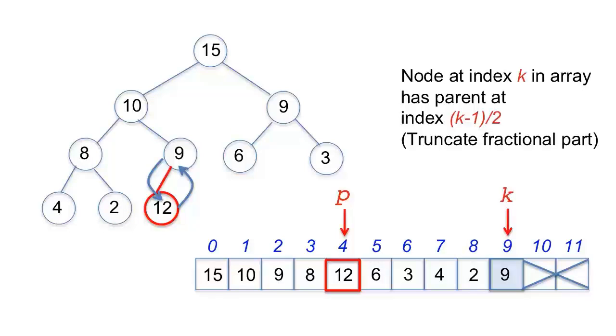Sift-up now moves up to the next level in the heap. This is affected in the array by moving the index k to the place of p, after which p is recomputed as 4-1, which is 3, divided by 2, which is 1.5, truncated down to 1. 12 and 10 are compared, and since 12 is greater, they switch places.